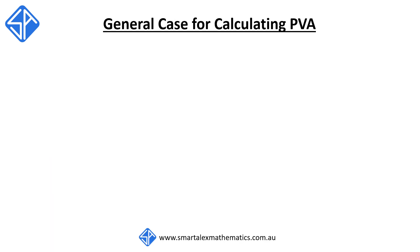In our previous example, the calculation of the PVA was relatively straightforward because it consisted of only four terms. In reality, we often would have to repeat these calculations for tens or hundreds of terms. But luckily, there is a formula to help us simplify the calculation.